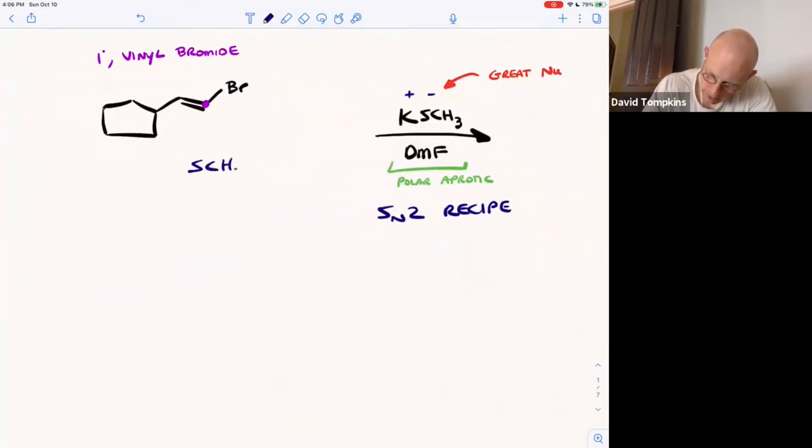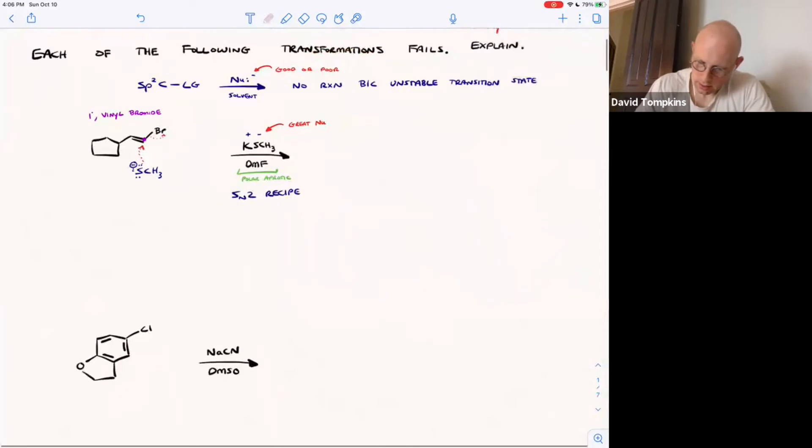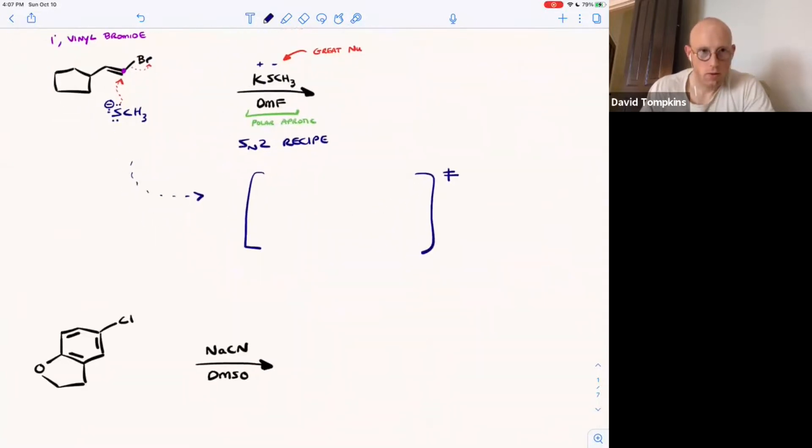So if it did undergo SN2, the mechanism would be something like this, where the nucleophilic sulfur is going to attack that carbon that's bearing the leaving group, and the leaving group would be eliminated. I'm using dotted lines here to show this mechanism occur. If it did occur, it would have to go through this transition state, where the purple carbon atom is both losing the leaving group, bromide dissociates, and sulfur attacks from the backside. That's the SN2 trajectory.